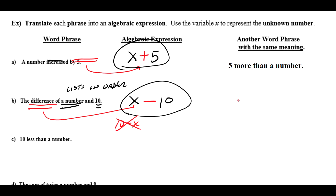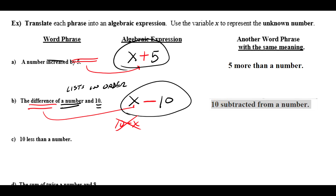Another expression that represents the same thing is '10 subtracted from a number.' If we start with a number and subtract 10, or '10 subtracted from a number,' that gives us the same result: x − 10.